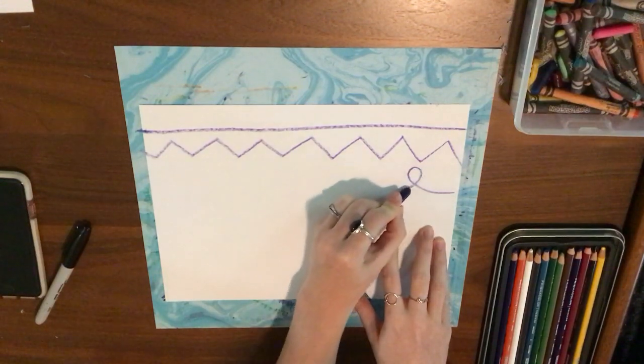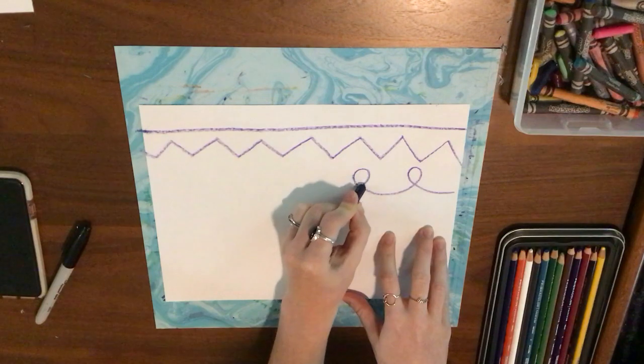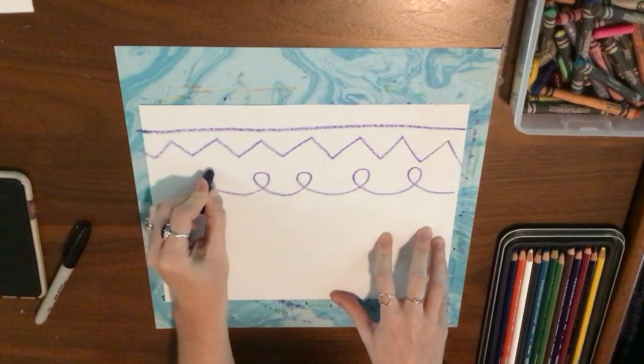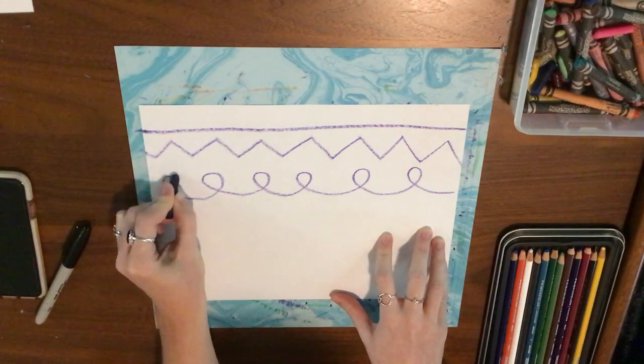Now I'm drawing a loopy line. Loop, it curves around and then comes back down, a loopy line.